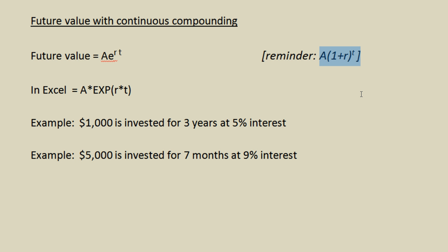Continuous compounding means we go even further beyond daily and just assume that the interest is compounding all the time, not daily, not by the hour, not by the minute, not by the second, just continuously, which sounds like a weird concept, but it actually makes the formulas a lot easier to work with once you get used to them.